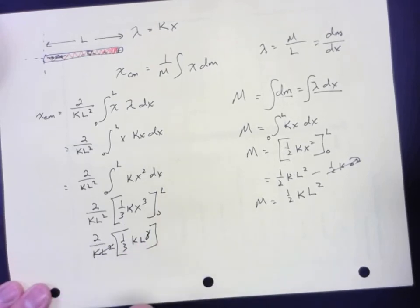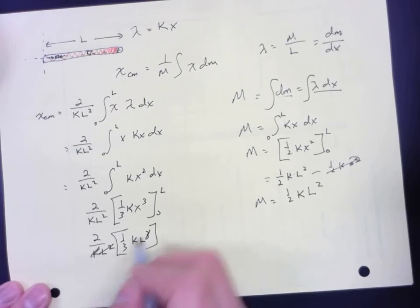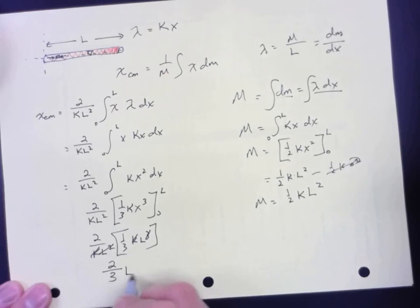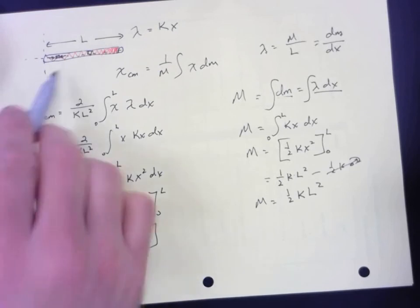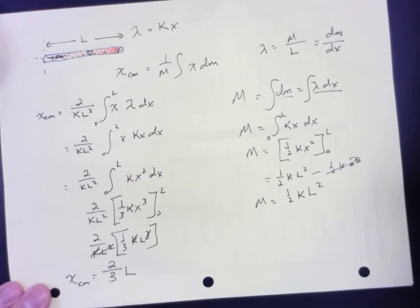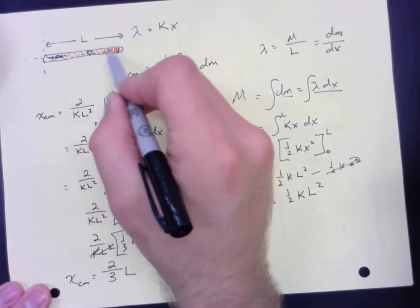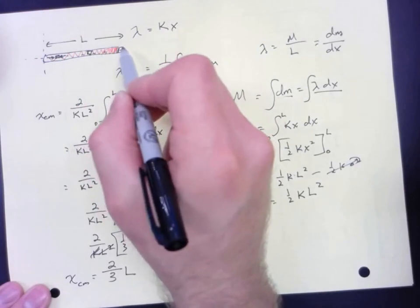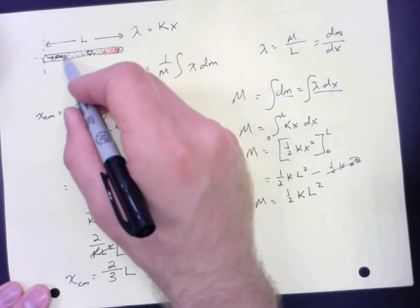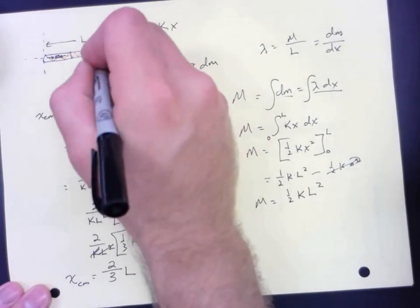So we're left with 2 over 3 L. And that would be the location of the center of mass of this rod since more of the mass is distributed towards this end. So it would be right there.